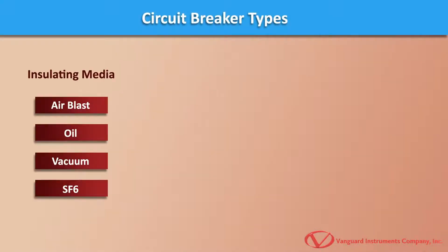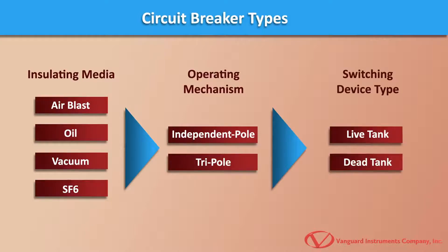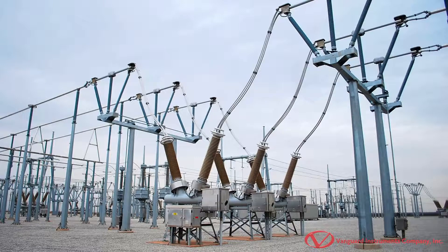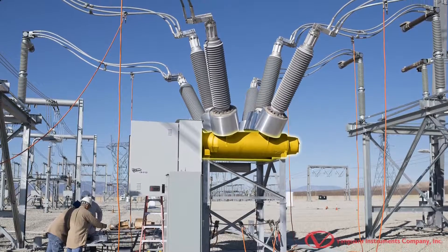Substation breakers are classified as either independent pole or tripole. They are further classified as live tank or dead tank breakers. Independent pole breakers feature a separate operating mechanism for each phase, while tripole breakers use a common operating mechanism for all three phases.